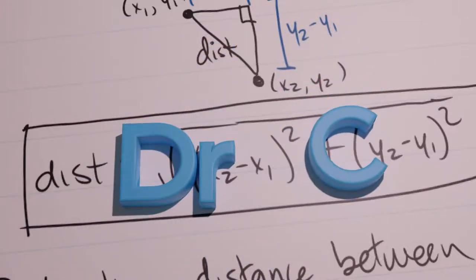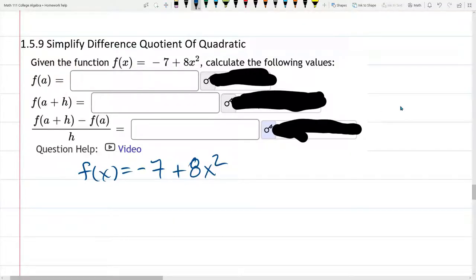This problem, we're going to simplify a difference quotient of a quadratic function. We're going to start by computing f of a. So I've rewritten f of x down below. Now I'm going to reorder it. I'm going to put this x squared term, the highest power term, in the front.